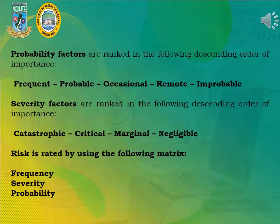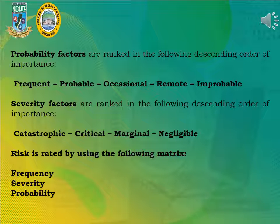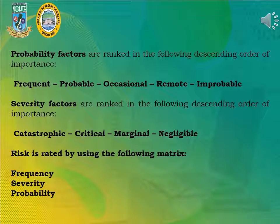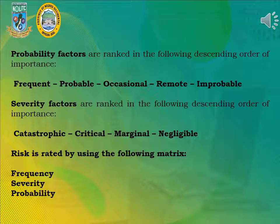Probability factors are ranked in the following descending order of importance: Frequent, Probable, Occasional, Remote, Improbable. Severity factors are ranked in the following descending order of importance: Catastrophic, Critical, Marginal, Negligible. Risk is rated by using the following matrix of Frequency, Severity, and Probability.